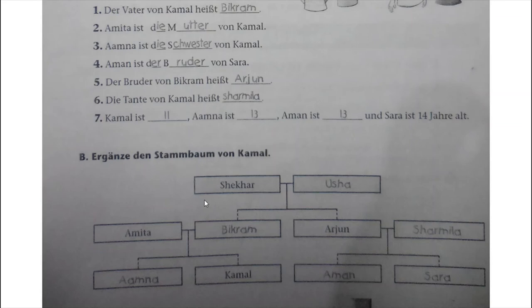Dann hier ergänze den Stammbaum von Kamal - we have to complete the family tree of Kamal. Sekhar, then Usha is the grandmother. Dann Amita, father Bikram. Arjun is the uncle, dann Sarmila is the Tante. Amman and Sarah are their kids. And then Amna is his sister.